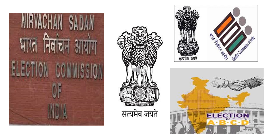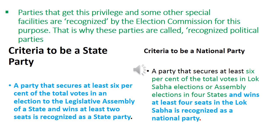The Election Commission of India is the apex body which controls and regulates all policies and rules related to elections and political parties. After forming a political party, it needs to register with the Election Commission, which is headed by a Chief Election Commissioner and two other commissioners. The Election Commission can control political parties' internal matters and any other constitutional issues related to political parties. All political parties are supposed to obey and respect the decisions of the Election Commission. Parties that get special facilities are called recognized political parties.